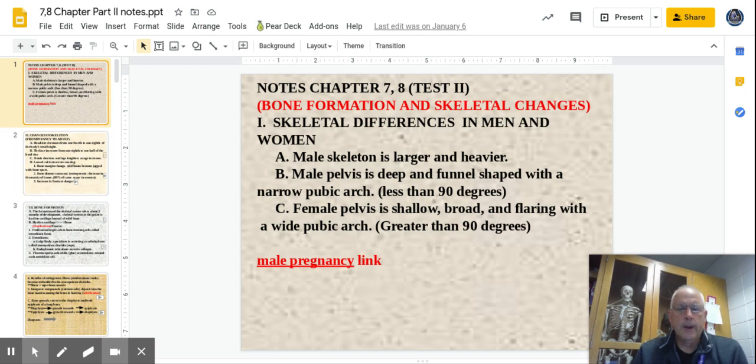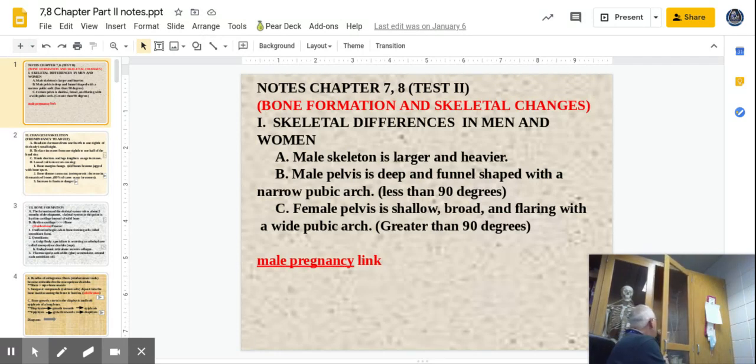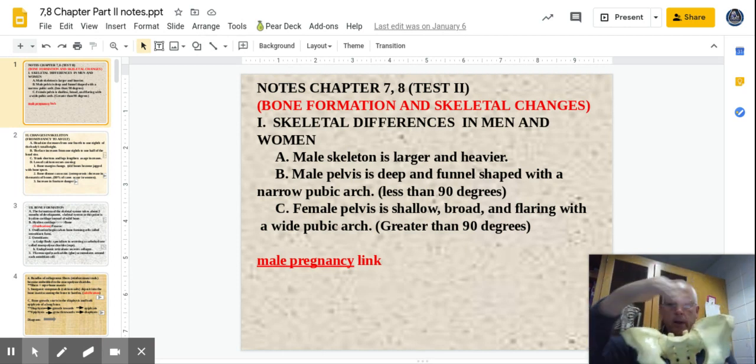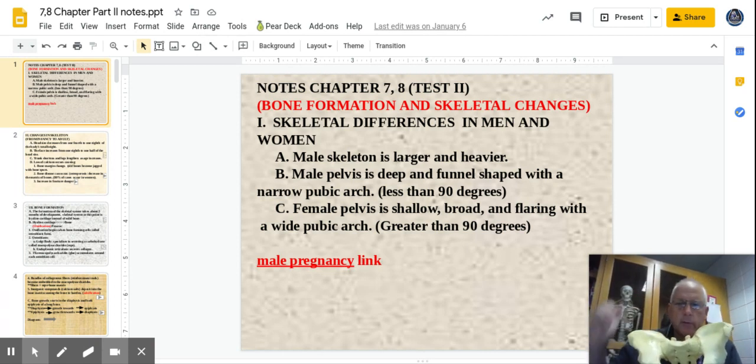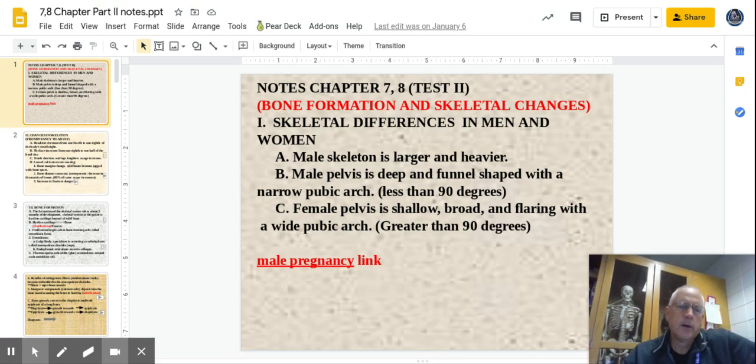And when you look at the pelvis, the male pelvis is deep and funnel-shaped, less than 90 degrees. The female is shallow, broad, and flaring, wider than 90 degrees. And obviously that's for the birth canal so the baby can fit through there. So this is what we're talking about. You can see this is a female and how wide it is across from one hip bone to the other hip bone. And obviously that's so a baby can fit through the birth canal. That's the biggest difference is that pelvis and how wide it is. So that's the biggest telltale difference between a male skeleton and a female.